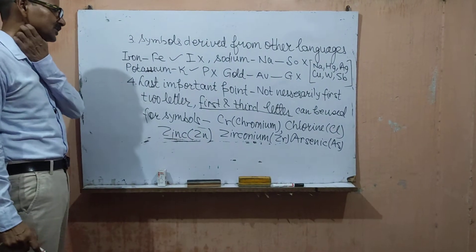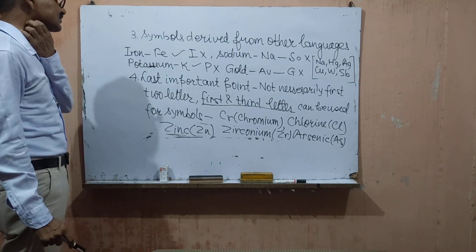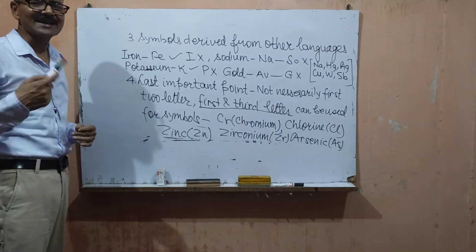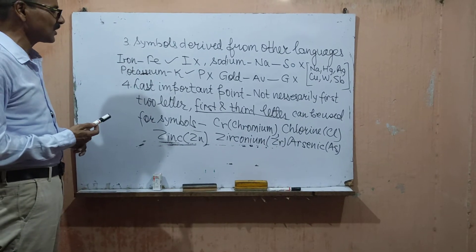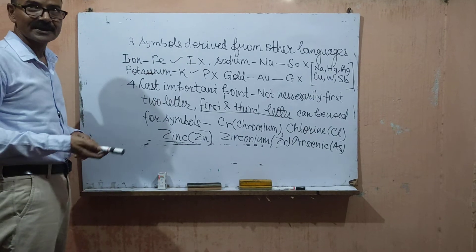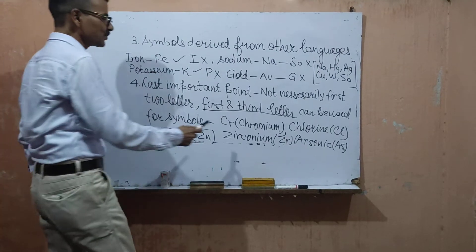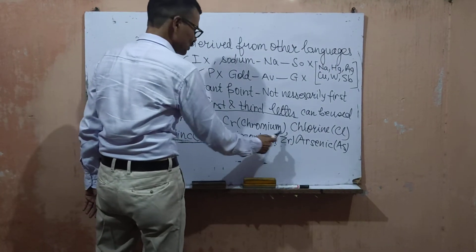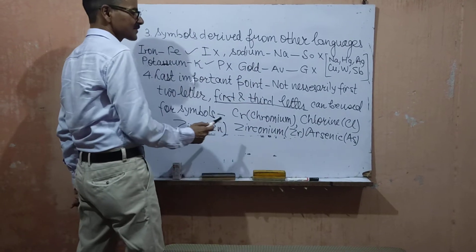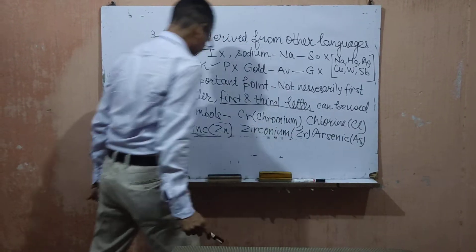The last point which is important here, that it's not necessary that the first and the second letter are taken in the symbol. It may be the first and the third letter taken as the symbol. Like chromium C-H-R-O-M-I-U-M, Cr is the symbol. Chlorine, Cl is the symbol.